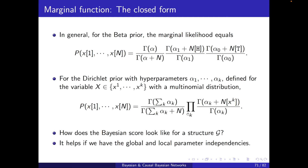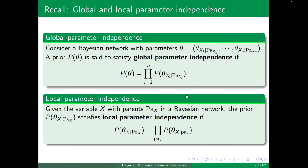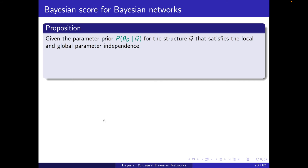It helps if we have global and local parameter independencies. For a Bayesian network with parameters theta, the prior p of theta satisfies global parameter independence if it can be written as a product over the family parameters for each variable. Local parameter independence means each family term can further be written as a product over the different parent configurations of xi.